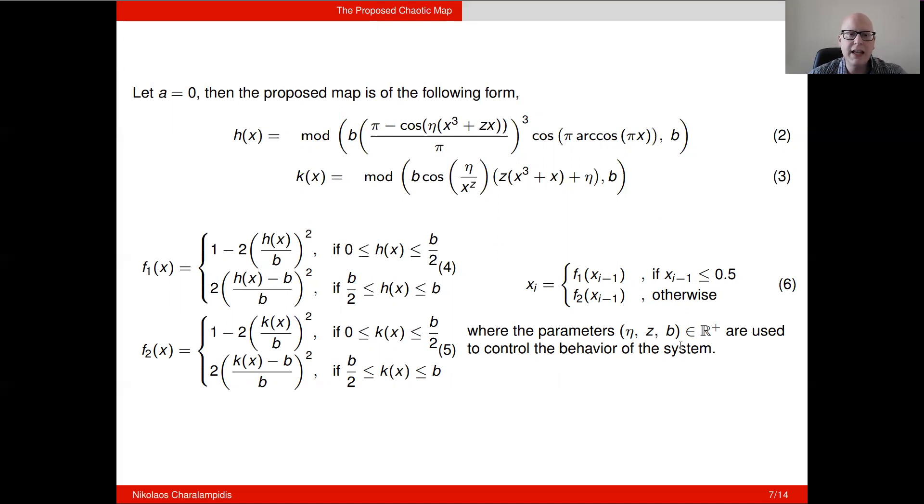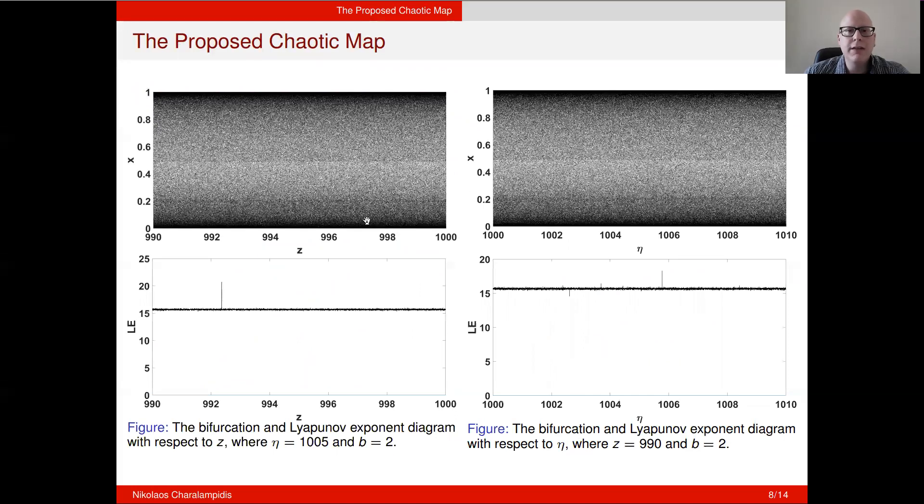To investigate the system's dynamical behavior, we plotted the bifurcation and their corresponding Lyapunov exponent diagrams. Here, in the first row, you see the bifurcation diagram with respect to Z and with respect to eta. And below, you see the corresponding Lyapunov exponent diagrams. As you can see from the bifurcation diagrams, it's immediate that constant chaos arises. And this is being validated by the corresponding Lyapunov exponent diagrams. And in fact, what we can see is that the Lyapunov exponent diagrams indicate that we have large Lyapunov exponent values, something which we desire in order to move forward with an encryption and decryption process.